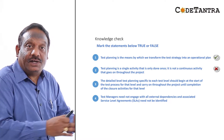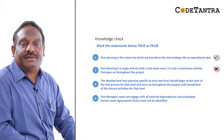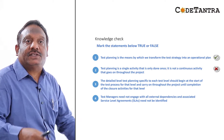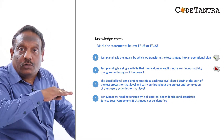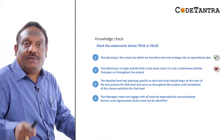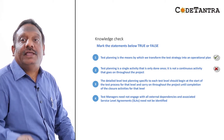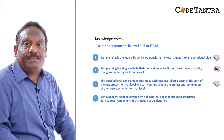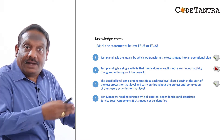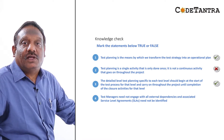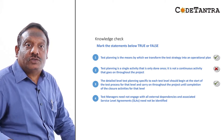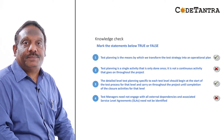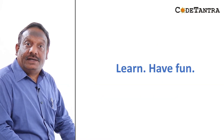Test planning is a continuous activity — it is not a single activity. Third statement: 'Detailed level test planning specific to each test level should begin at the start of the test process for that level and carry on throughout the project until completion of the closure activities for that level.' This is true. Fourth: 'Test managers need not engage with all external dependencies and associated SLAs need not be identified.' This is false. Hope you enjoyed this session!